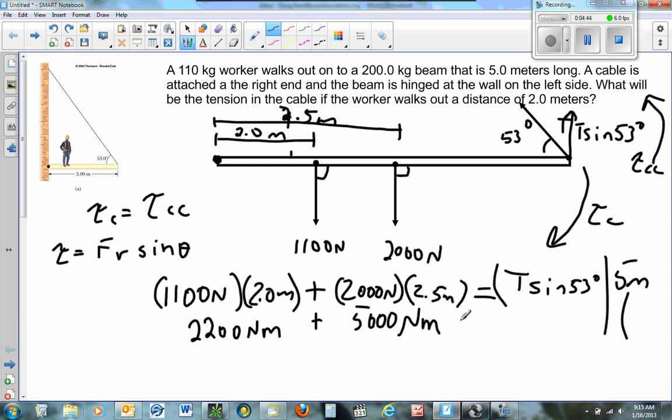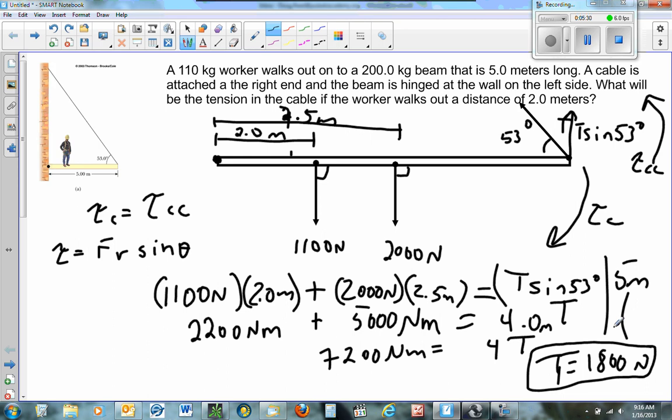5,000 newton meters equals... Now you have to be in degree mode. Sine of 53 is 0.8, basically 0.8 times 5 gives me about 4. 4 times T. So I'm going to add those two together. 2,200 plus 5,000, that's going to give me 7,200 newton meters equals 4T. Divide that by 4, and that gives me 1,800. T equals 1,800 newtons. That's how much tension will be in the cable if the guy walks out 2 meters. It will only get bigger as he walks further out. That's how you do one like that.